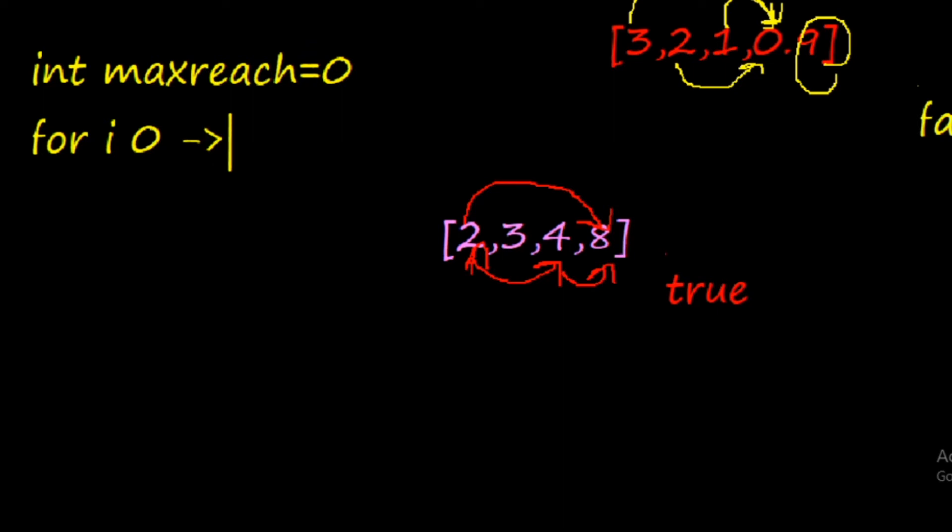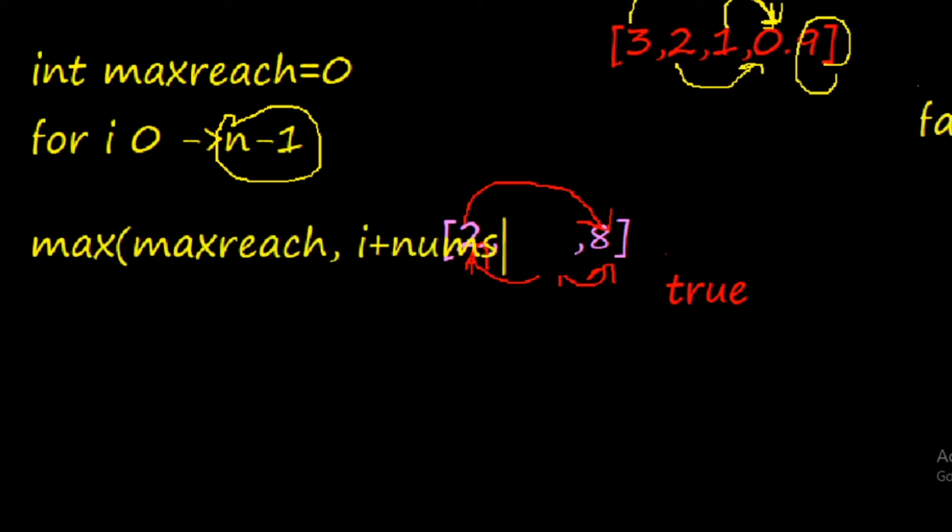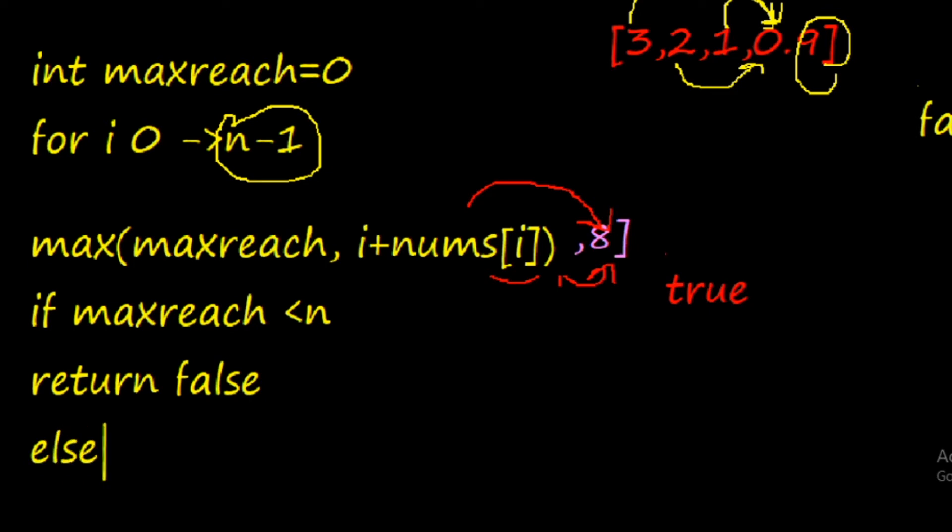Then we can say for i from zero to n minus one, where I am supposing n to be the number of elements in our vector, that is the number of elements. We will take max of maxreach and i plus nums[i]. If our maxreach is less than n, we will return false, else we will return true.